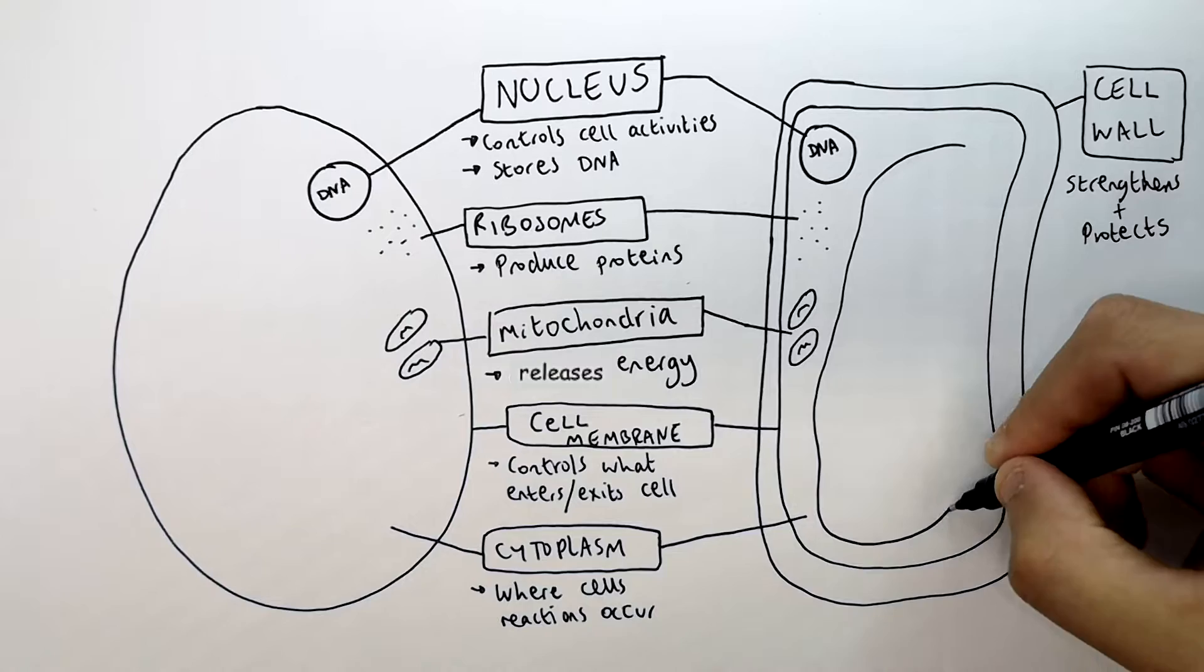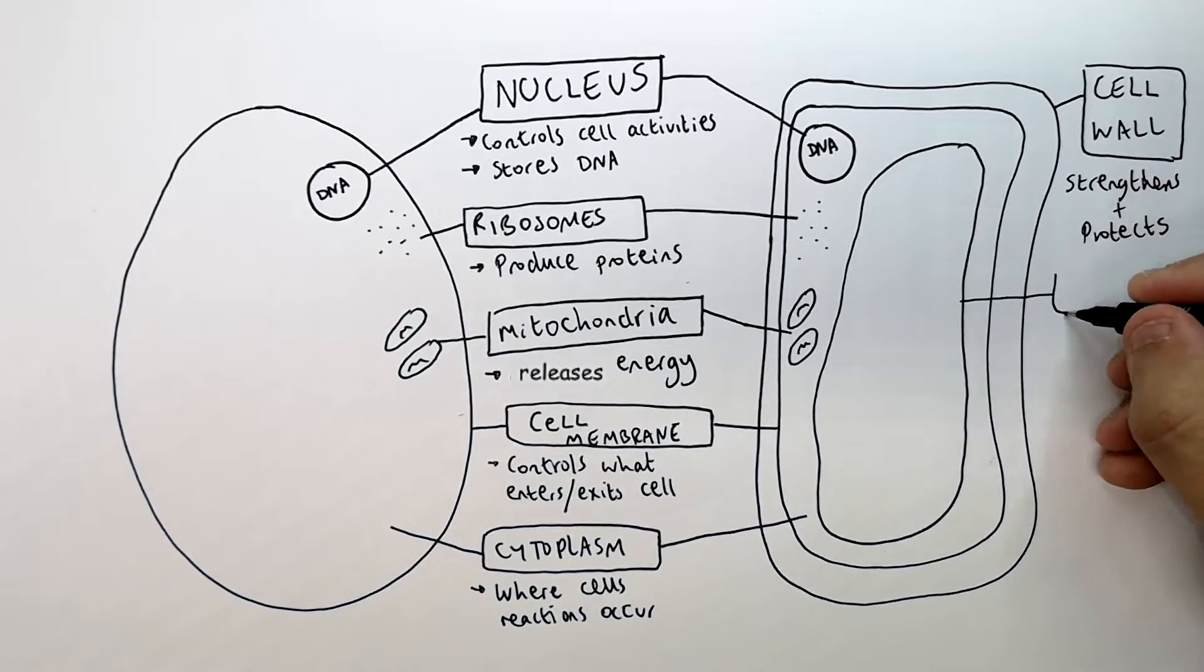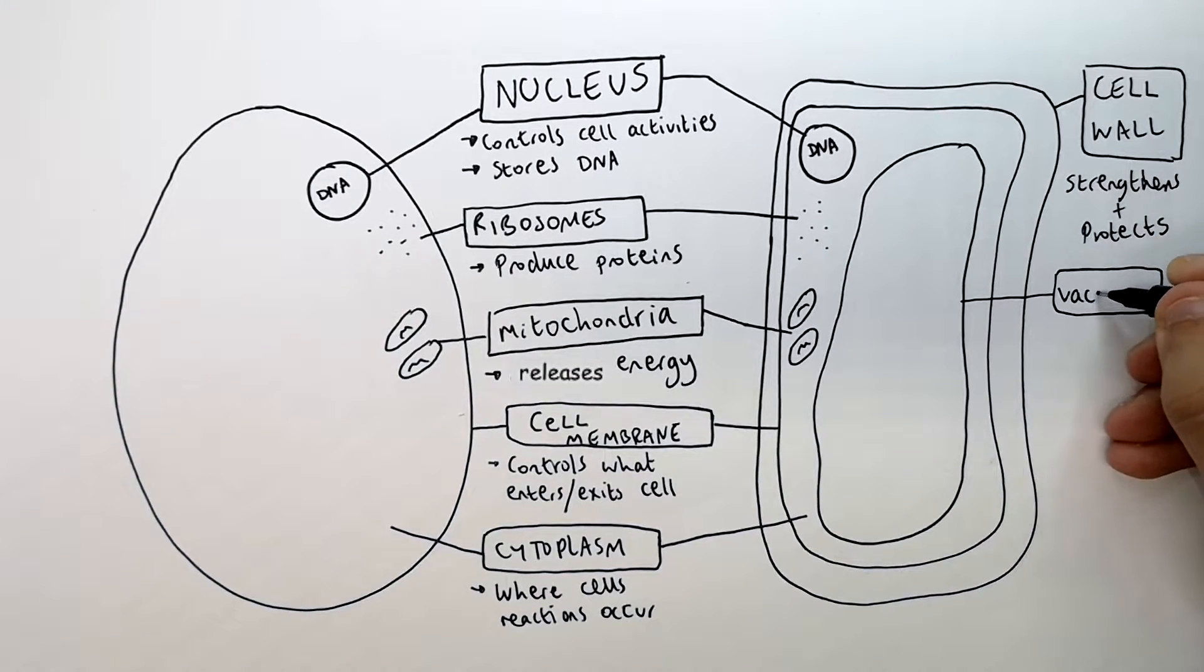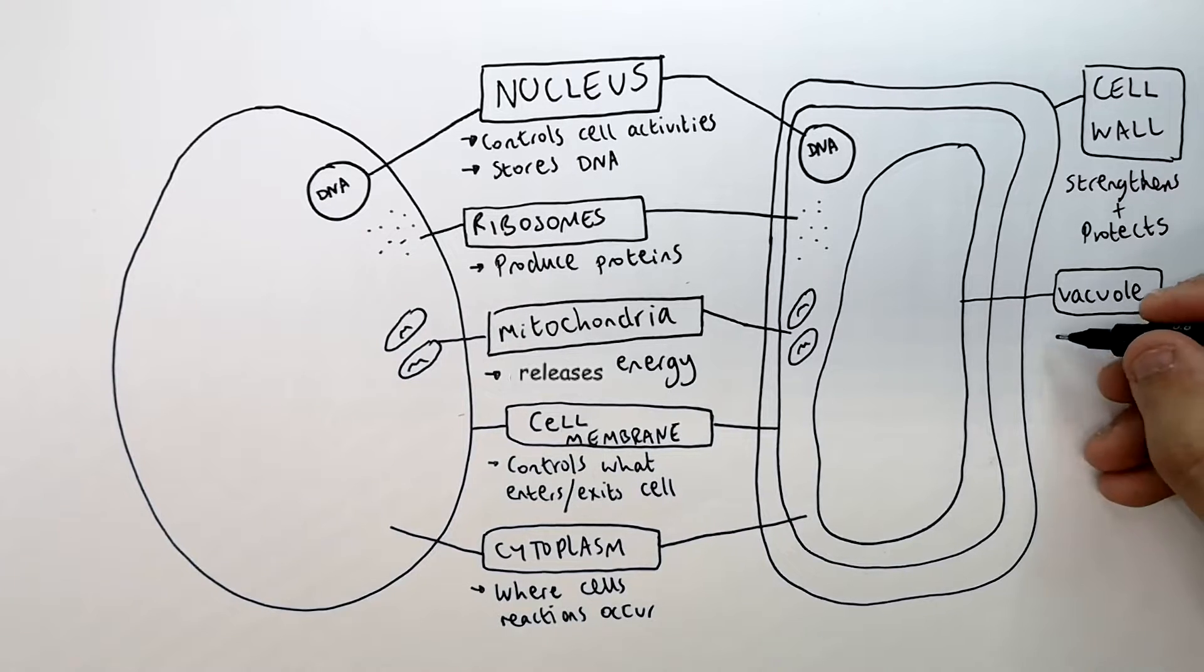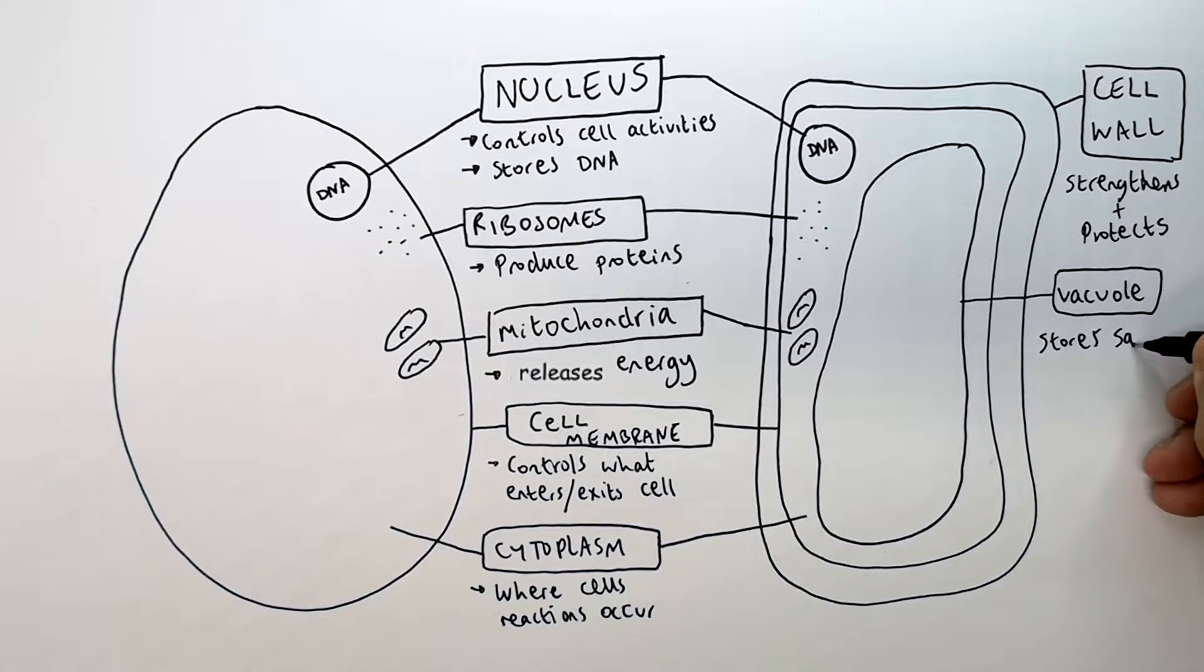The plant cell has a vacuole. The vacuole is where cell sap is stored. It's an energy store for the plant.